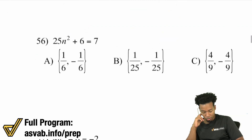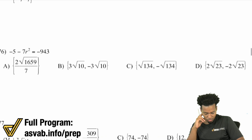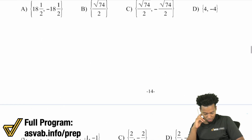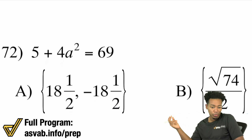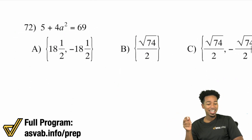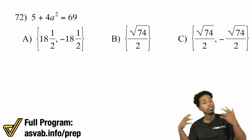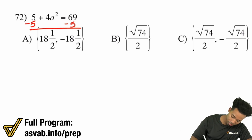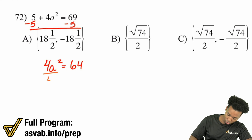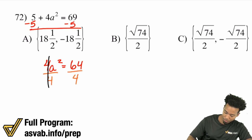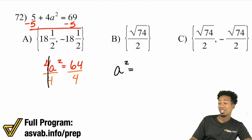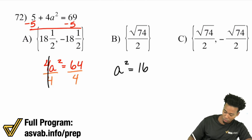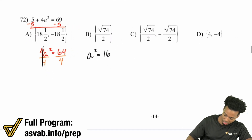There are so many different ways this can appear. The key idea is to get the squared term by itself, then take the square root and you're done. For this last one, subtract 5 on both sides to get 4a squared equals 64, then divide both sides by 4 to get a squared equals 16. Take the square root of both sides and a equals positive and negative four.